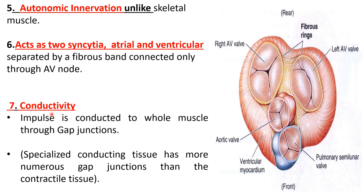Property seven: the impulse or action potential is conducted to the whole muscle through gap junctions. Fast conduction or slow conduction of impulse depends on how many gap junctions are present in a specific cardiac muscle fiber. The specialized conducting tissue has more numerous gap junctions than the contractile tissue, and the Purkinje fibers have the most speed among the conducting pathways.